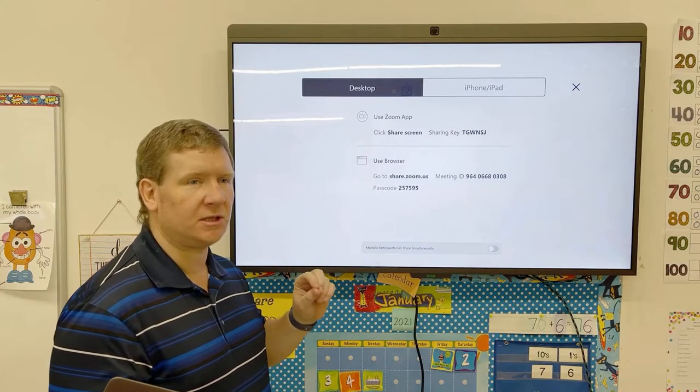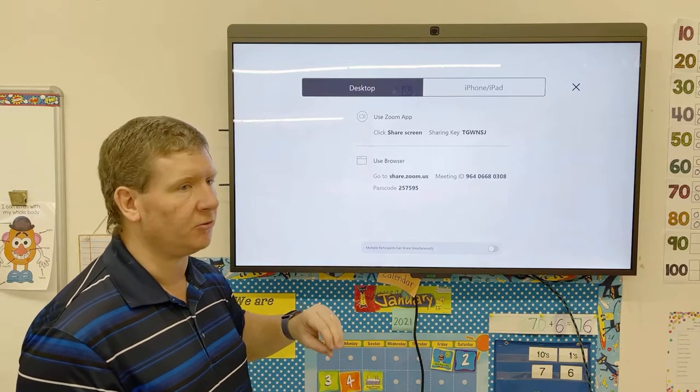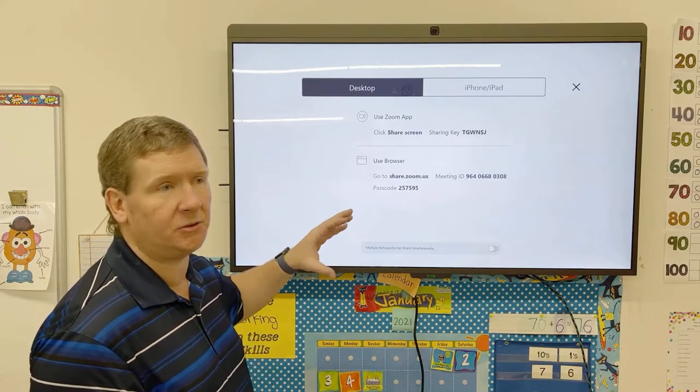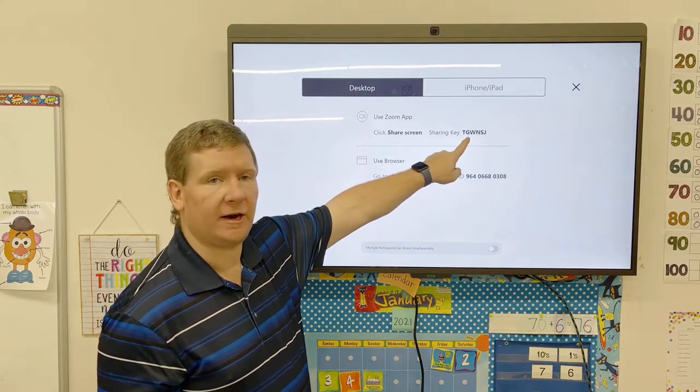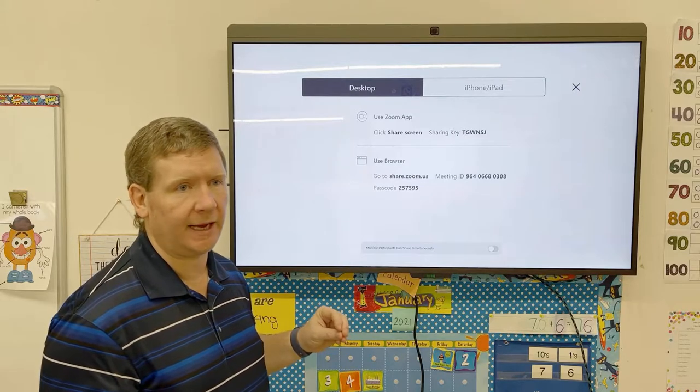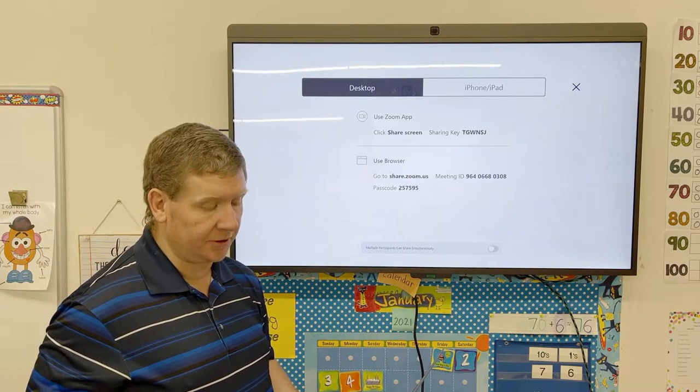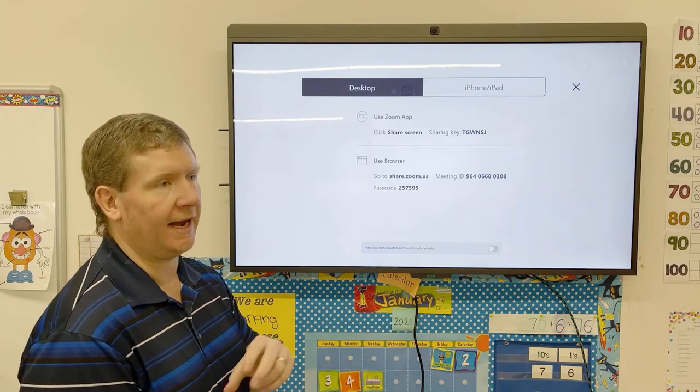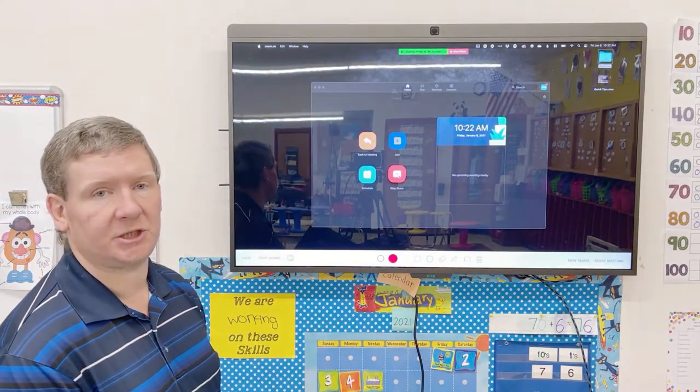If you have the Zoom rooms feature, which is what my account is tied to, and this TV set up as a Zoom room, it won't ask for the sharing key. But most people, you don't need to have the Zoom room account. So what it will ask you to do is put in that sharing key. You're going to click that share screen on your computer. If it asks for the share key, you put that key in. And then instantly your screen is shared.